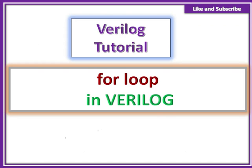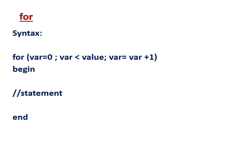In this video, we are going to be looking at the for loop. This is the syntax for a for loop: 'for' then parenthesis, variable equal to 0 — or variable initialization — then variable less than value, then variable equal to variable plus 1, then close bracket, begin-end statement. Inside begin and end, we have statements.